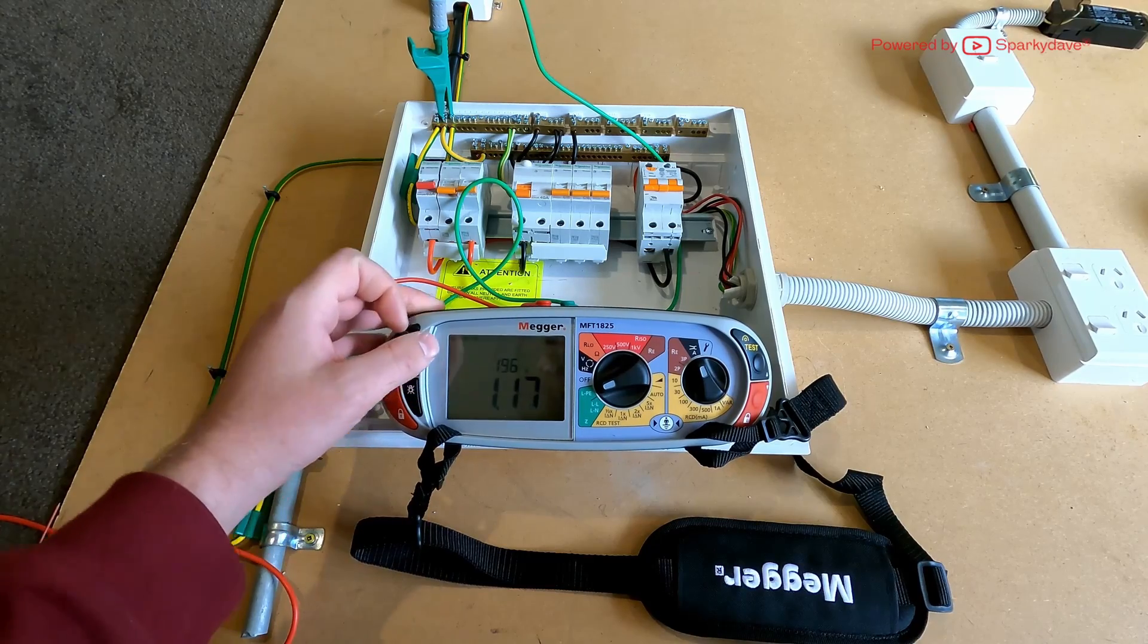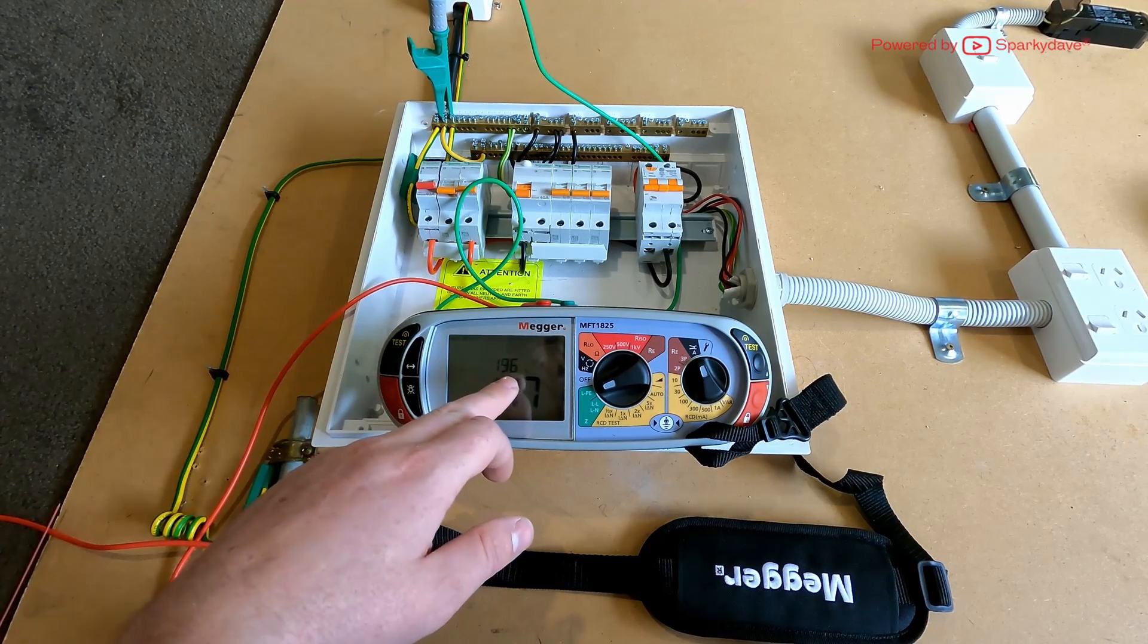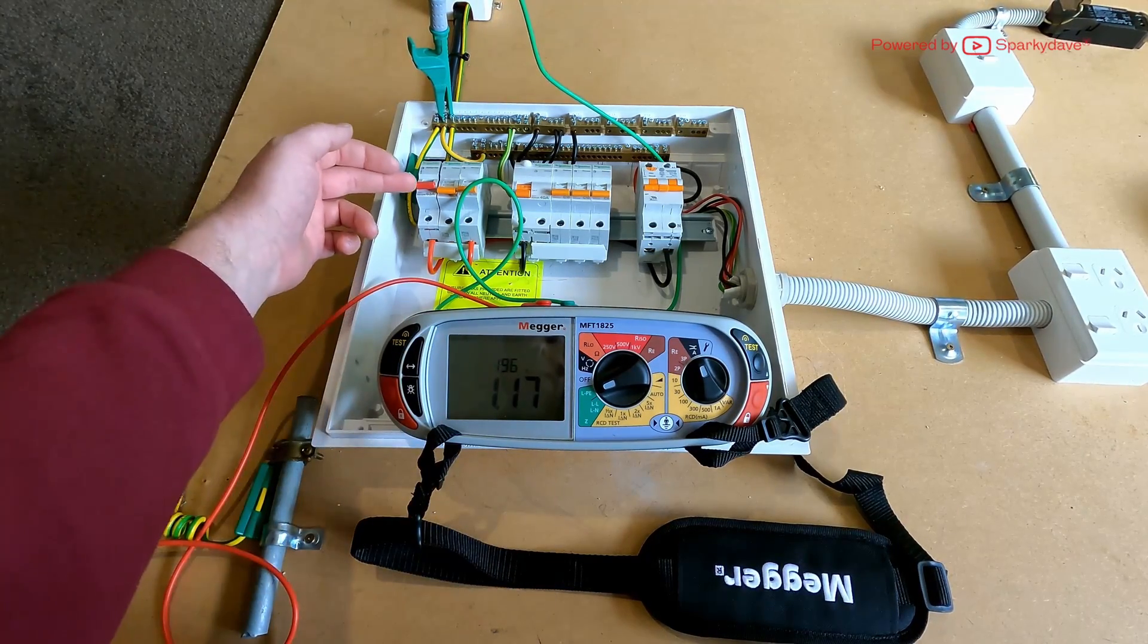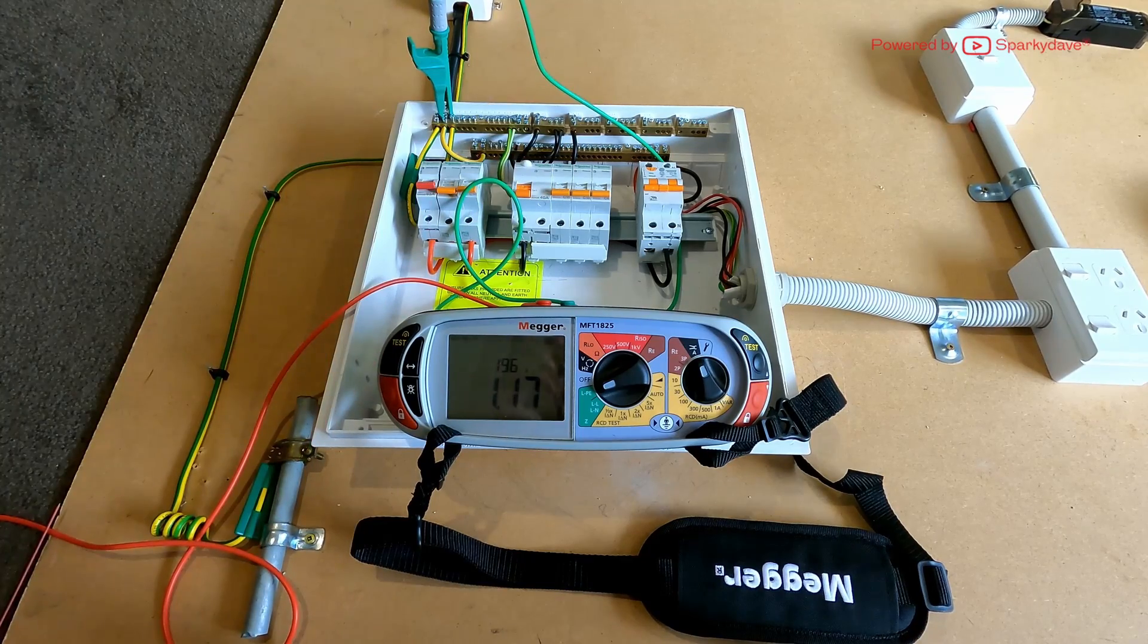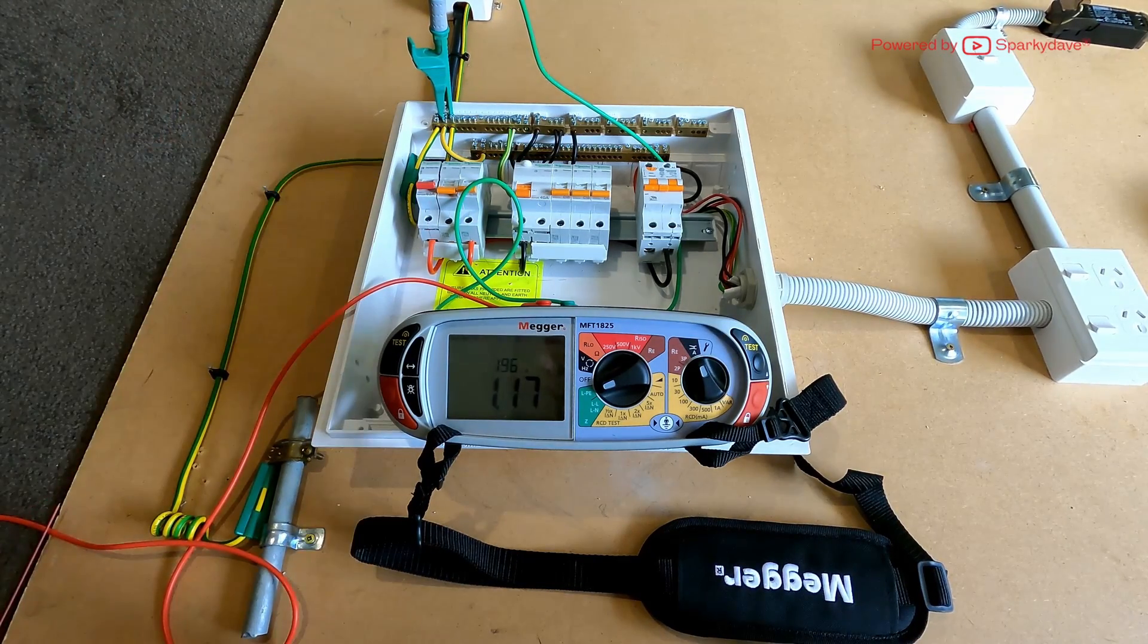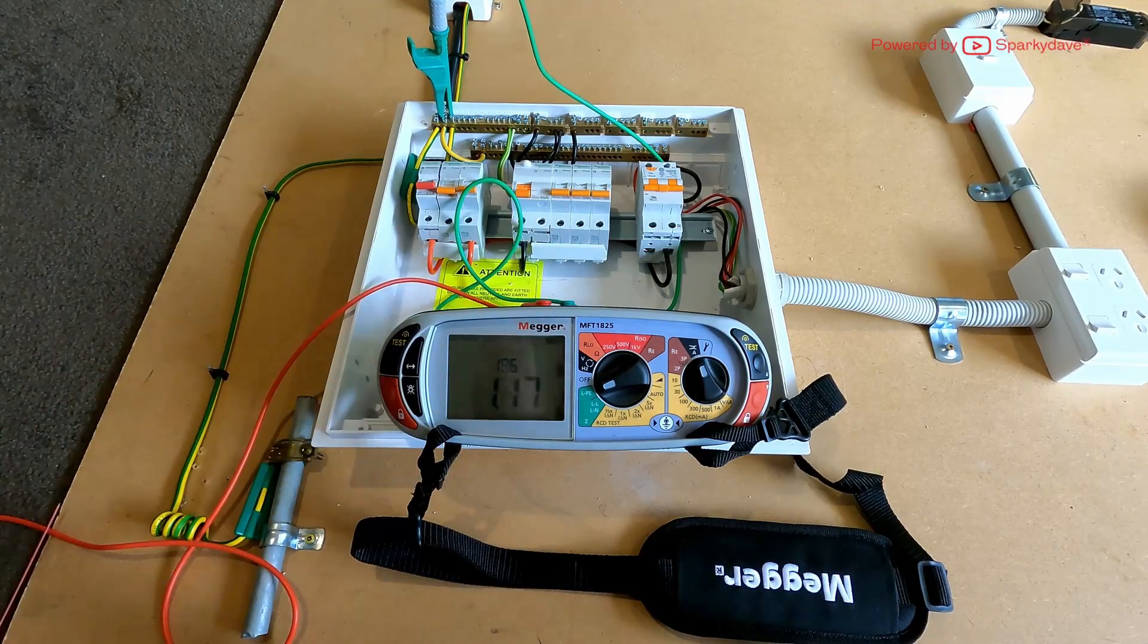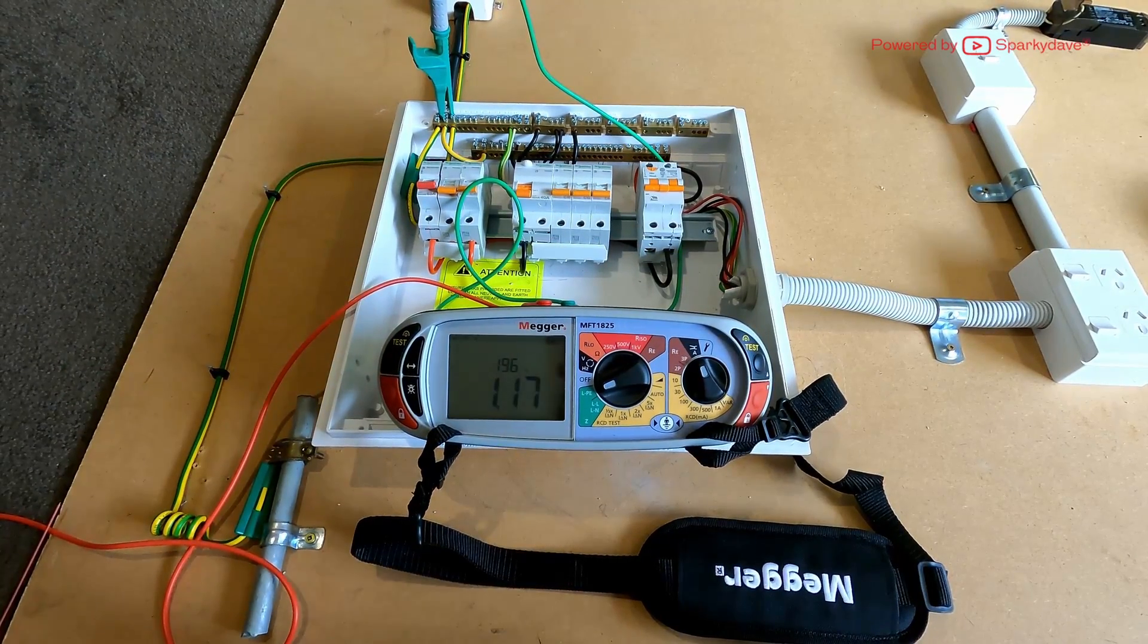This fault current produced is going to be high enough to trip the circuit protection. It's lower than that 6 kiloamp rating on the switchgear. Now with our impedance result, you want to go through and verify under table 8.1 whether or not your circuit protection is adequate to disconnect within 0.4 seconds.